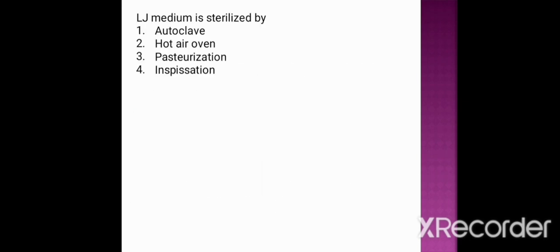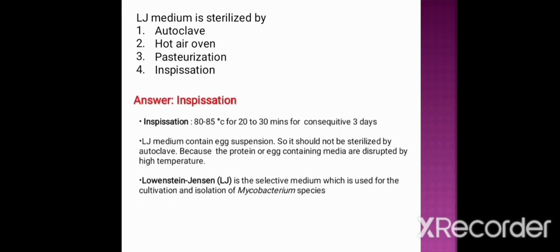Next question: LJ medium is sterilized by which method? Option one: autoclave. Option two: hot air oven. Option three: pasteurization. Option four: inspissation. The correct option is inspissation, done at 80 to 85 degrees centigrade for 20 to 30 minutes for three consecutive days — a moist heat sterilization process. LJ medium contains egg suspension, so it should not be sterilized by autoclave because protein- or egg-containing media are disrupted by the high temperature of 121 degrees centigrade. LJ is a selective medium used for cultivation and isolation of Mycobacterium species.